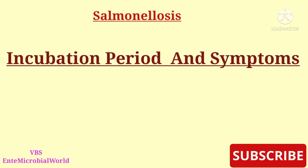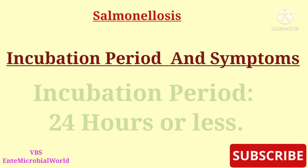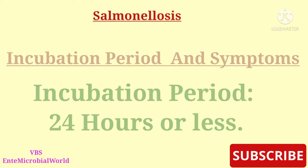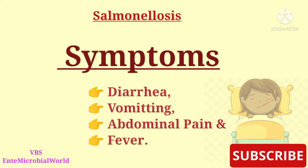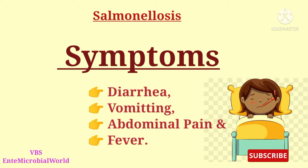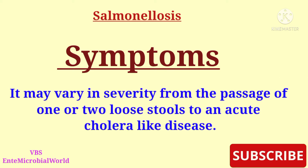Other common species are salmonella enteritidis, salmonella eidelberg, salmonella agana, salmonella irko, salmonella indiana, salmonella newport, and salmonella anadam. The disease develops after a short incubation period of 24 hours or less. Symptoms include diarrhea, vomiting, abdominal pain, and fever.